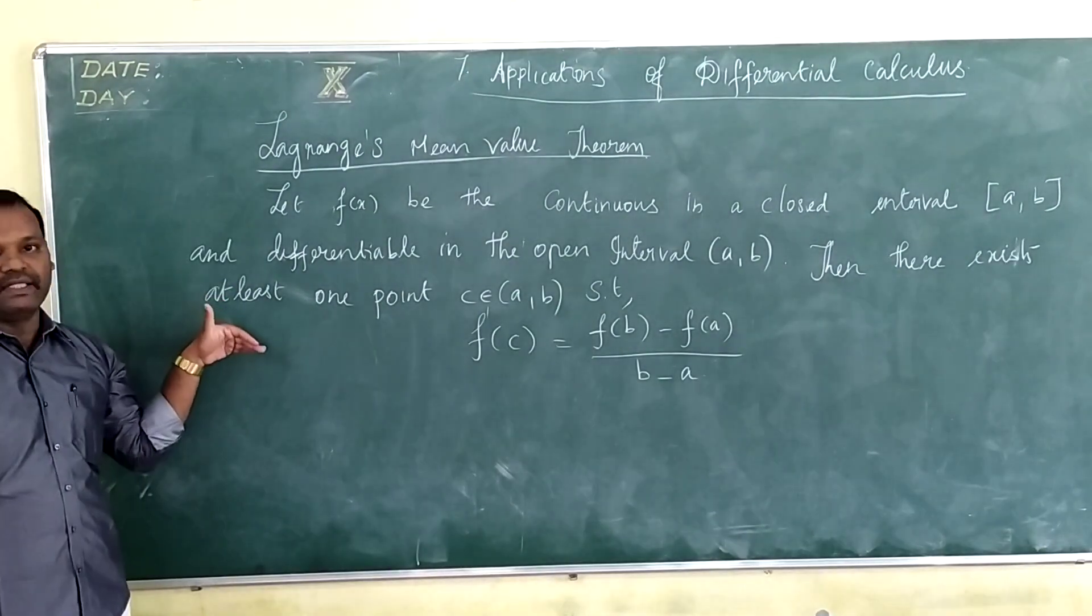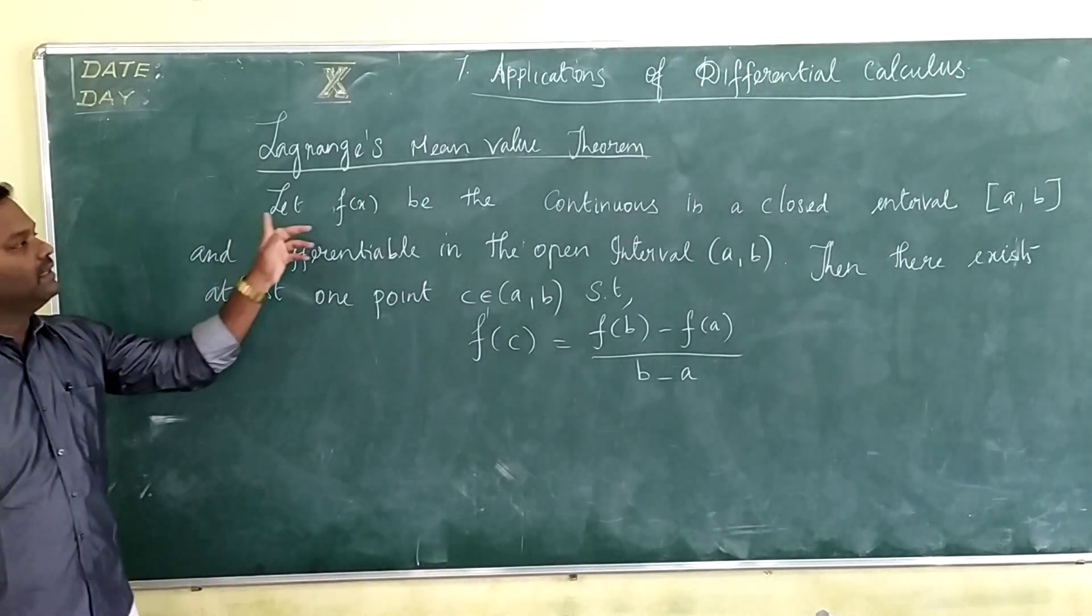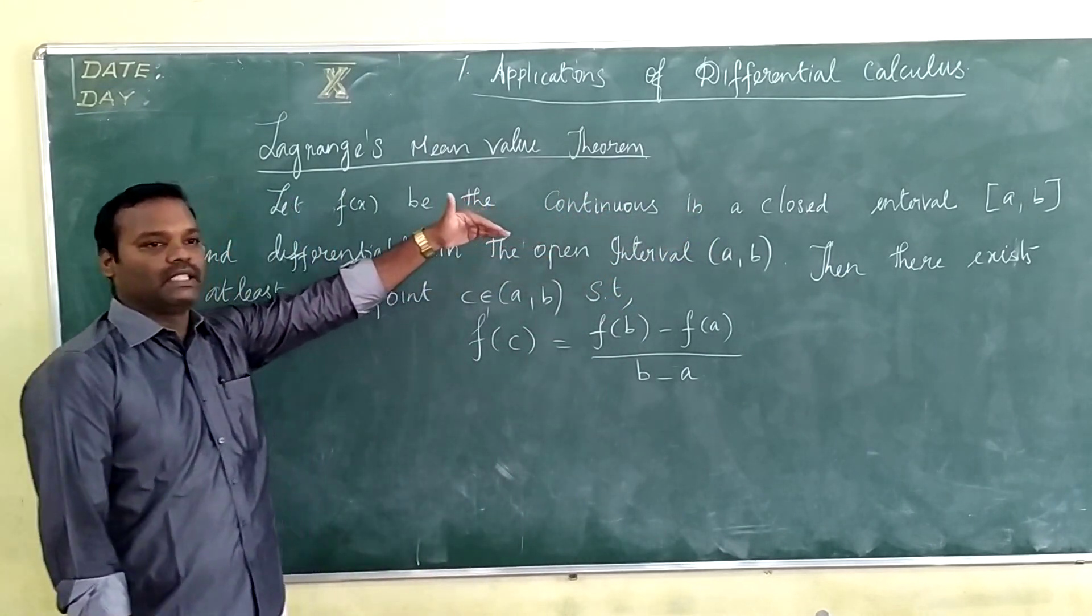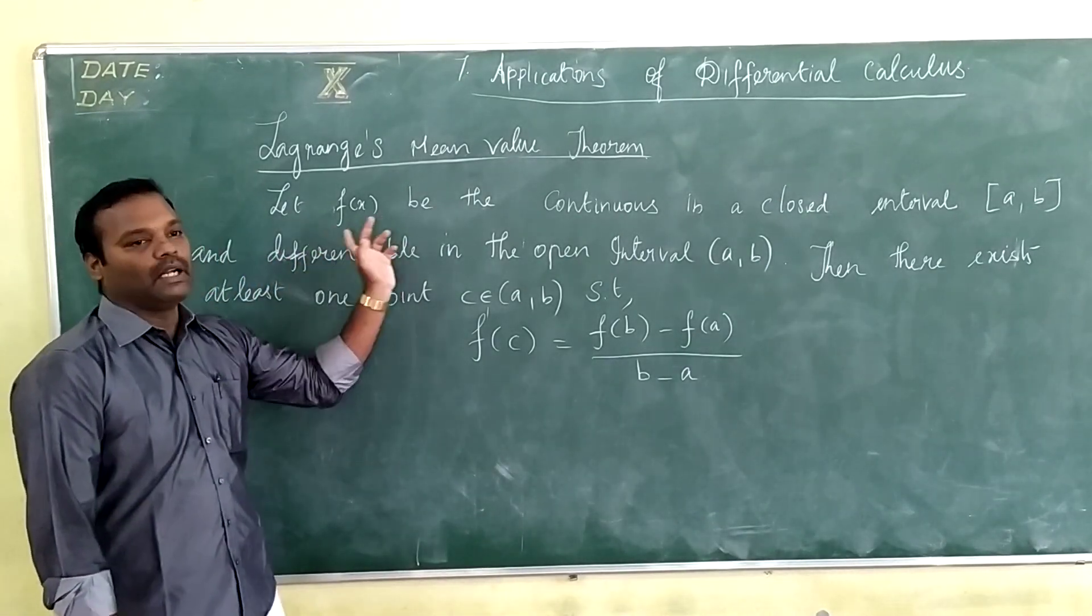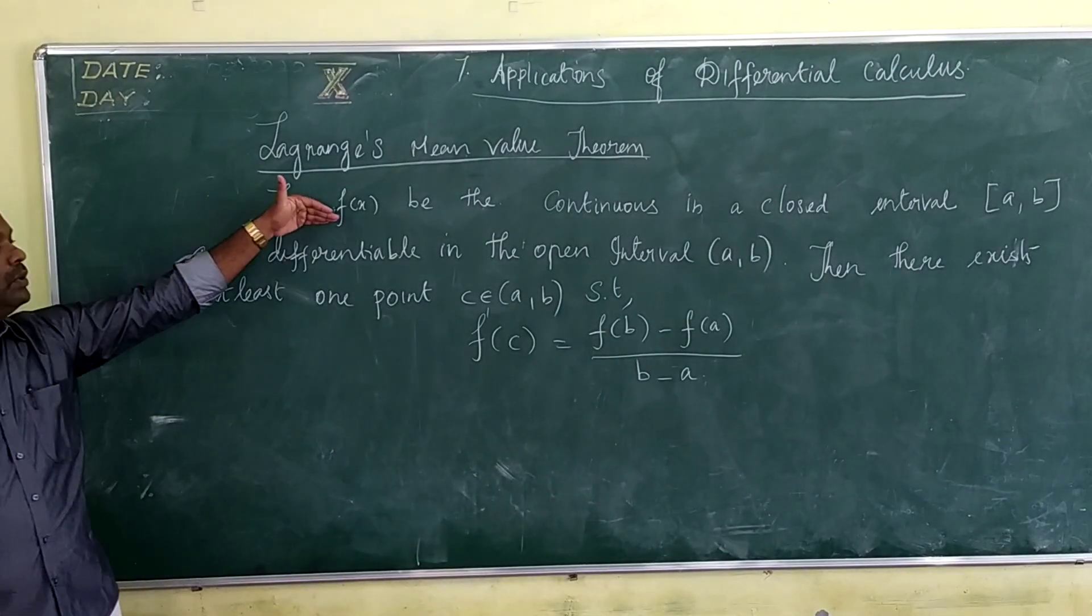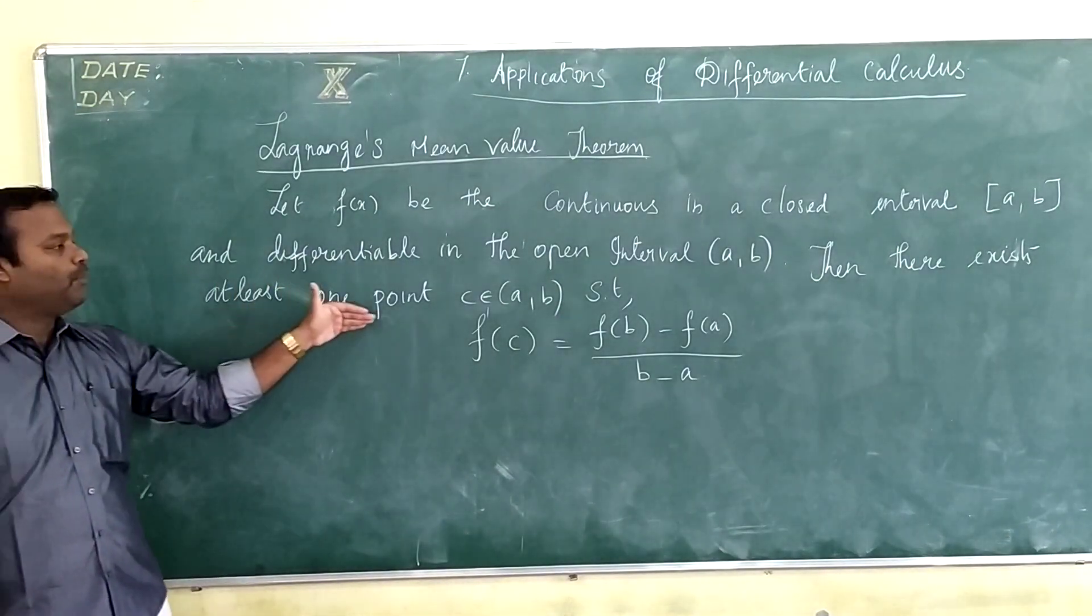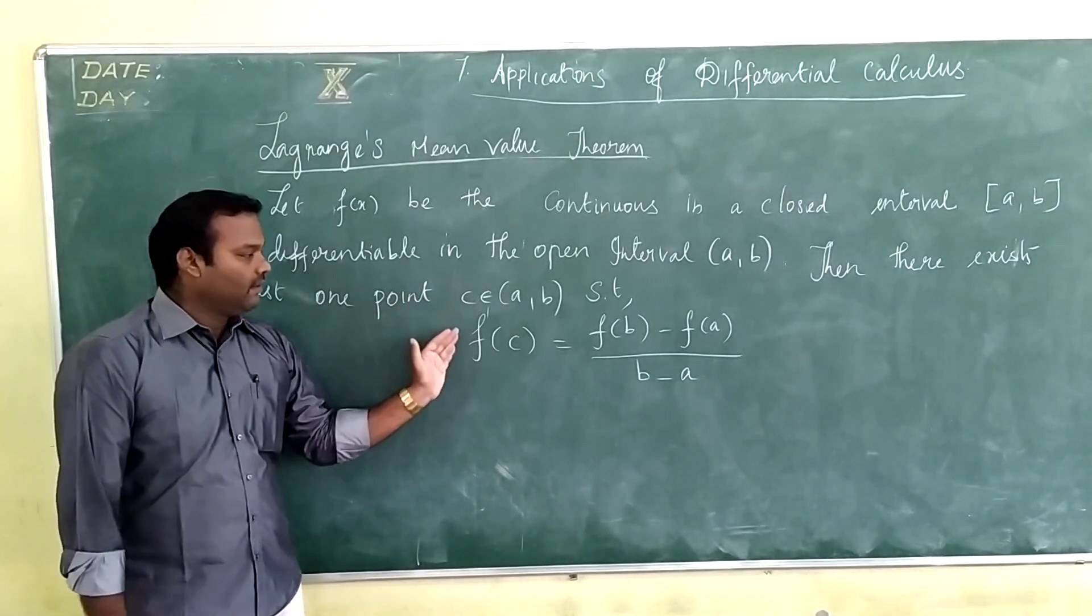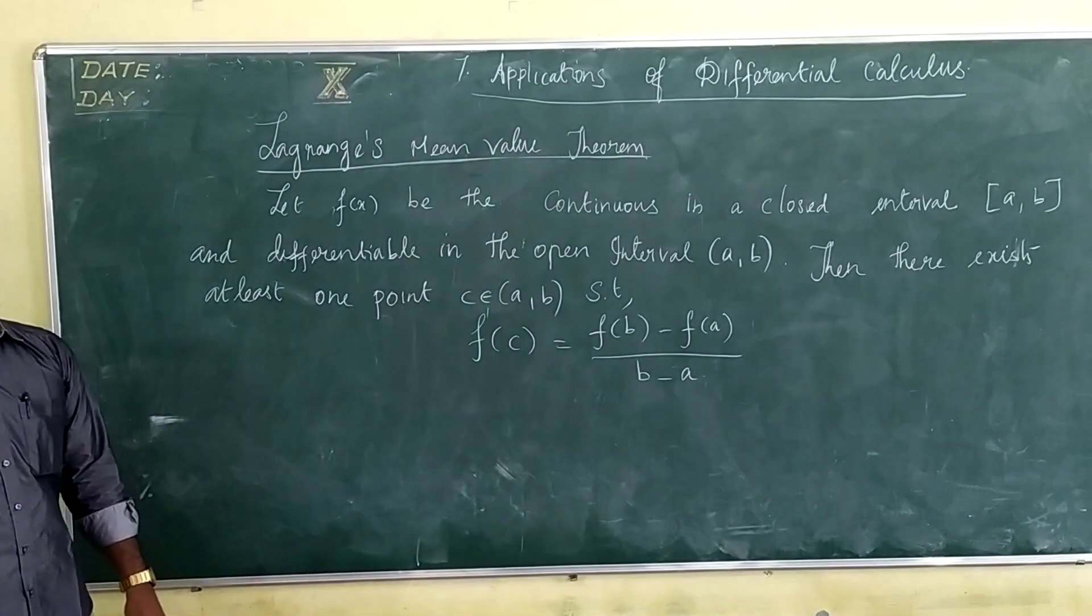So this is the statement of this theorem. Here you have to verify only two things. First, whether the given function is continuous or not. And second, whether the function is differentiable on the open interval or not. If these two conditions are satisfied, then we can say a point belongs to the open interval (a, b) such that f'(c) equals f(b) minus f(a) divided by b minus a.